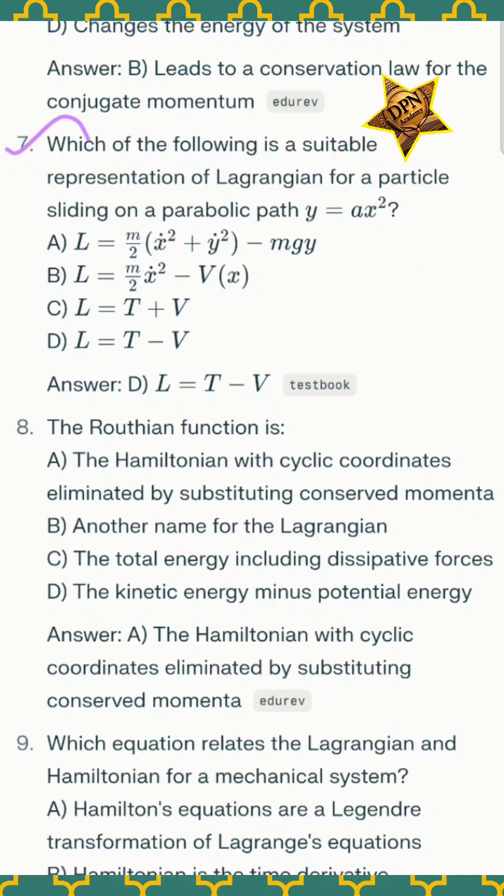Question number seven: which of the following is a suitable representation of Lagrangian for a particle sliding on a parabolic path y = ax²? The correct option D - Lagrangian is the difference between the kinetic energy and potential energy.